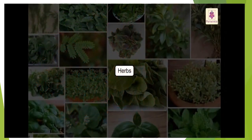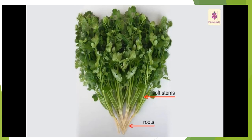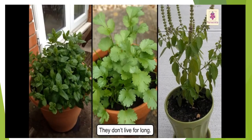The third one is herbs. Some plants are small and they have weak stems — such plants are called herbs. For example, spinach, mint, coriander, and many more. As you can see in the picture of coriander, it has soft green stems and roots. Herbs are weak and don't grow very high, and they live for only a few months.